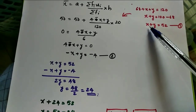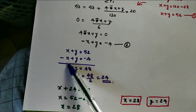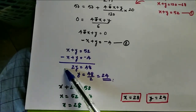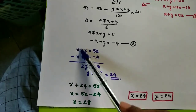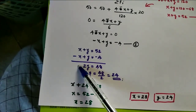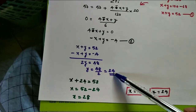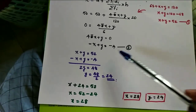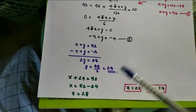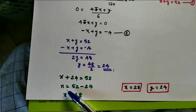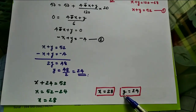Solving equations 1 and 2 simultaneously: equation 1 is x plus y equals 52; equation 2 is minus x plus y equals minus 4. Adding both equations: x and minus x cancel, leaving 2y equals 48, so y equals 24. Substituting y equals 24 into equation 1: x plus 24 equals 52, so x equals 52 minus 24, which equals 28. Therefore x equals 28 and y equals 24.